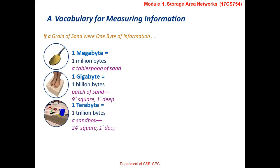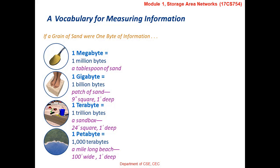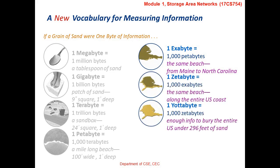Let us briefly look at the vocabulary used for measuring information. If a grain of sand were 1 byte of information, then 1 megabyte equals a tablespoon of sand, or 1 million bytes. 1 gigabyte equals a patch of sand 9 inches square and 1 foot deep, which equals 1 billion bytes. We also have other vocabulary: 1 exabyte equals 1,000 petabytes, and 1 zettabyte equals 1,000 exabytes. All these terms are used for measuring the information that needs to be stored.